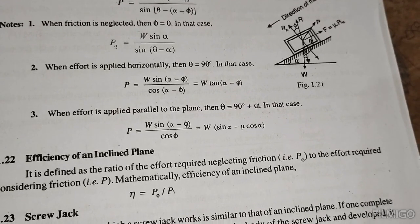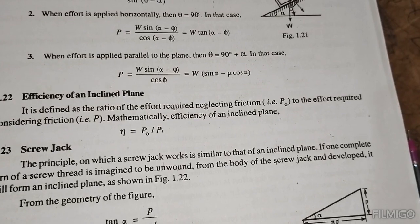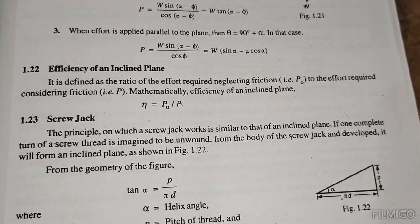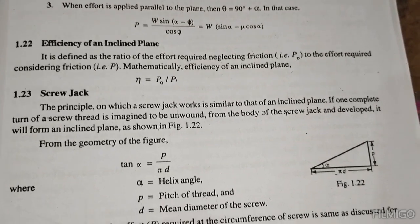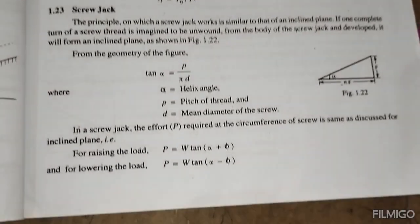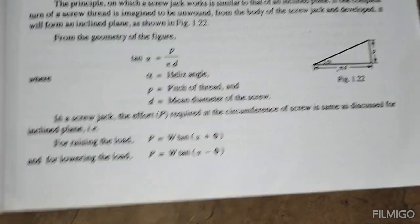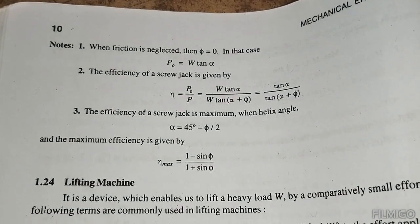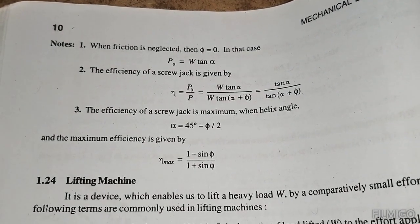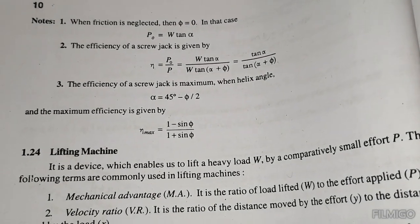On an inclined plane, the effort T equals W sin alpha plus mu cos alpha for raising and W sin alpha minus mu cos alpha for lowering. For a screw jack, tan alpha equals p divided by pi d. Raising load: P equals W tan of alpha plus phi. Lowering load: P equals W tan of alpha minus phi. Efficiency of screw jack equals P_0 divided by P, which equals W tan alpha divided by W tan of alpha plus phi.